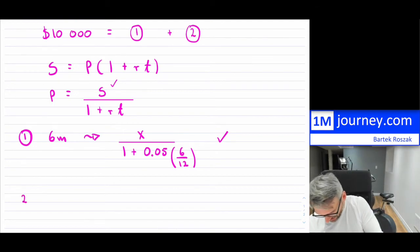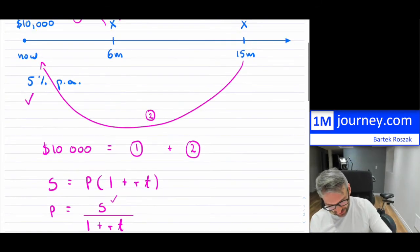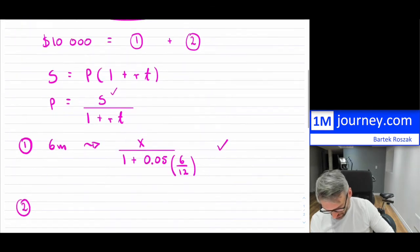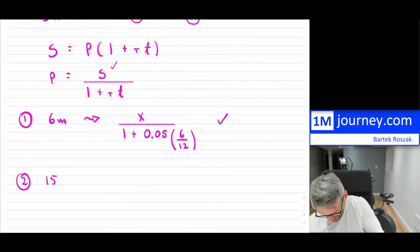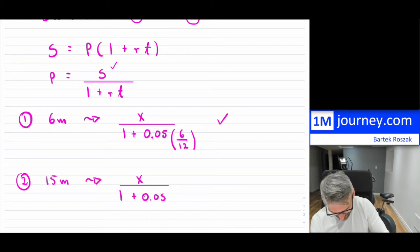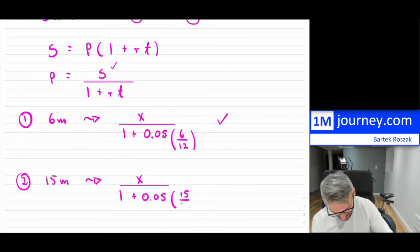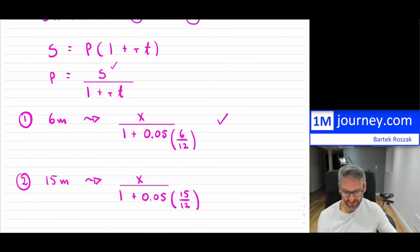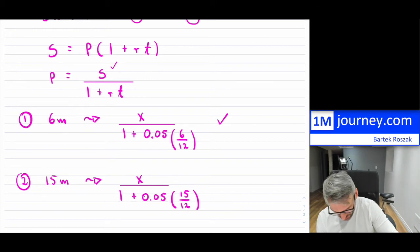The second payment at 15 months is going to be X again — the same amount. However, the denominator changes: it's still 5%, but now T is 15 over 12 to convert back to years. So this payment is X divided by (1 + 0.05 × 15/12).